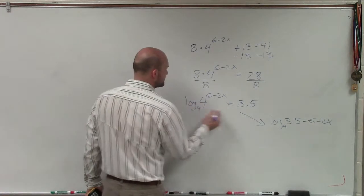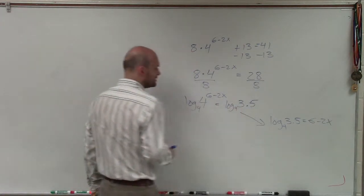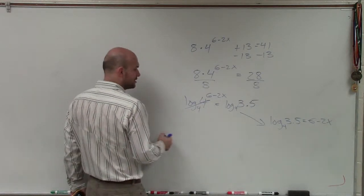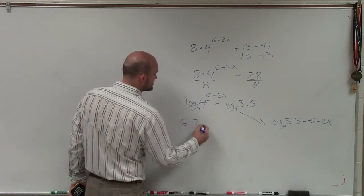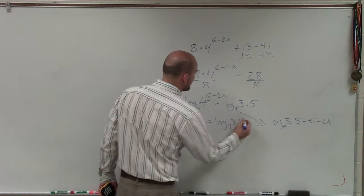I could also take the log of base 4 on both sides. When doing that, that goes out, and I'm left with (6 minus 2x) equals log base 4 of 3.5.